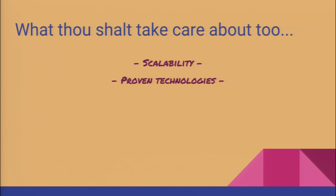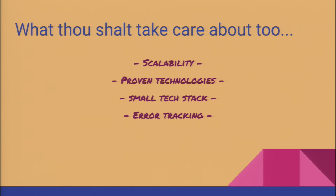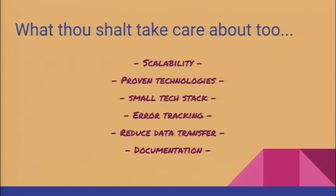Proven technologies: we cannot use a technology that is hot right now but will be obsolete in one or two years. Small tech stack: it will be easier to maintain for the people who come after us, it will have fewer errors, integration tests will be easier — we'll have a much easier life. Error tracking: if something goes wrong, we want to be able to debug it. Reduce data transfer: reducing it will make messages faster and also reduce our cloud provider bills. And documentation — the most important one — because we all love to write documentation. Actually, nobody writes documentation.